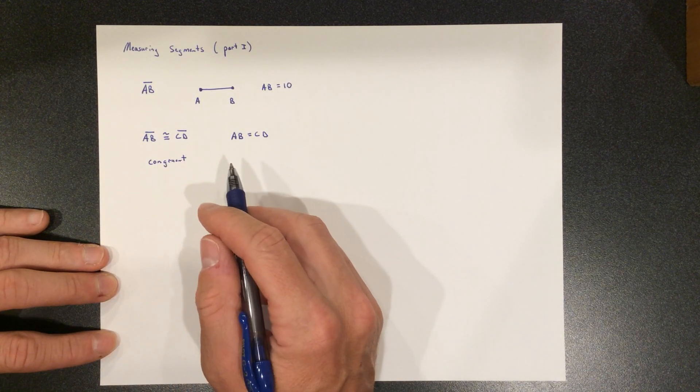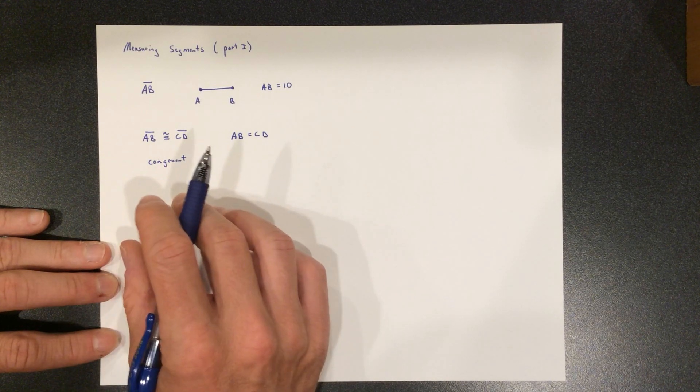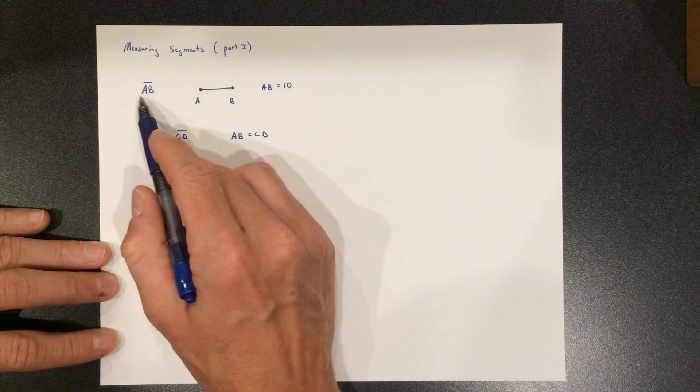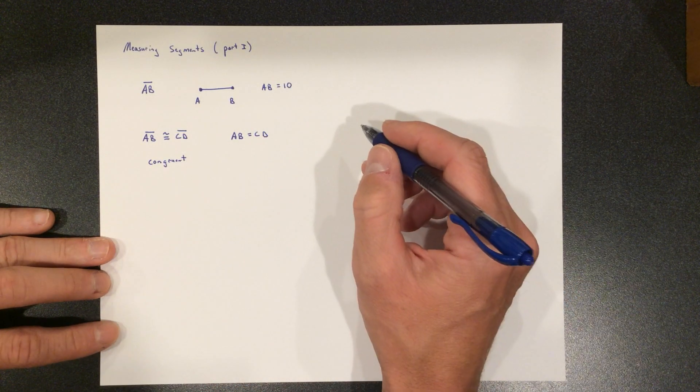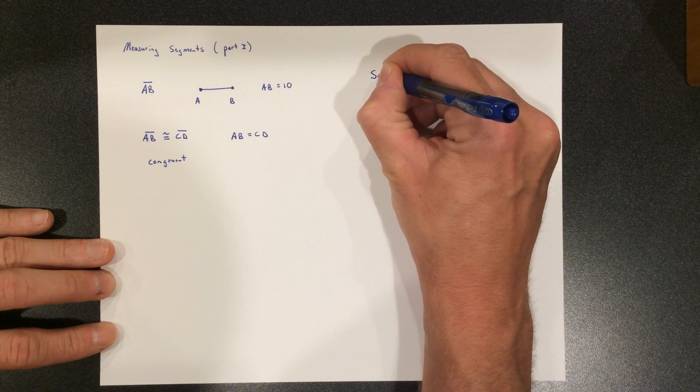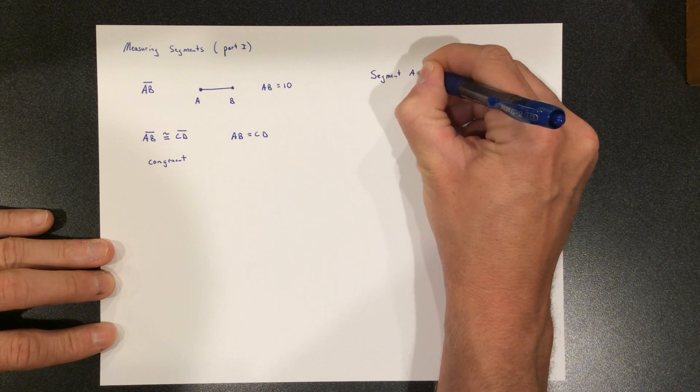Congruent line segments have equal lengths. Okay, that's not bad. And then what else can we do? Well, so we can talk about line segments being congruent. We know they're equal. We can talk about the length of a line segment. There's the notation again. And we can also talk about the segment addition postulate. Now, that sounds really complicated.